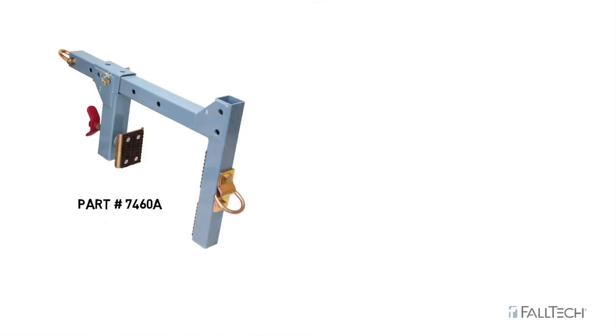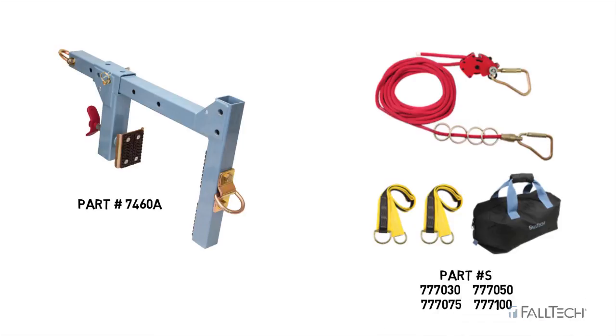The parapet wall anchor is part number 7460A and may be used with Falltech Horizontal Lifelines part numbers 777030, 777050, 777075, and 777100.